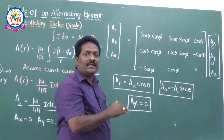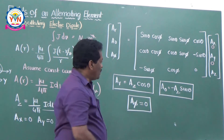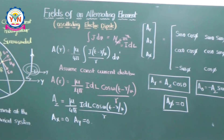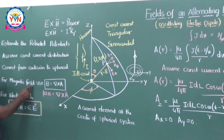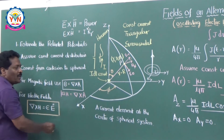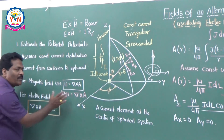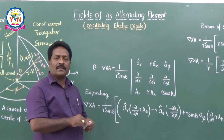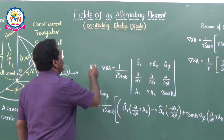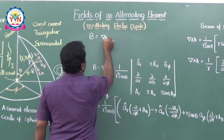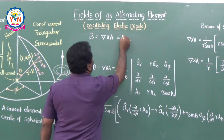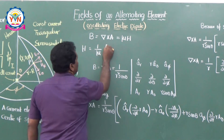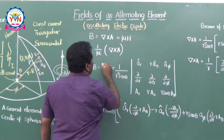Now we can proceed to the fourth step - estimation of the fields. To estimate the magnetic field, use H = (1/μ)(∇ × A). The A equations are readily available. You mathematically calculate the curl of A to get the magnetic field. After estimating the potentials, we use B = ∇ × A = μH, and therefore H = (1/μ)(∇ × A), which means taking the curl of the vector magnetic potential.